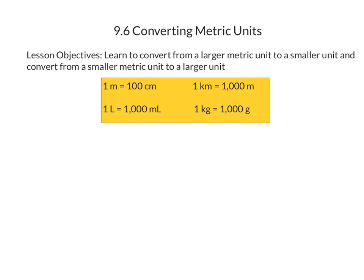To begin, we're going to take a look at some conversion factors that are going to be very helpful for us to solve our problems today. One meter is equal to 100 centimeters, one kilometer is equal to 1,000 meters, one liter is equal to 1,000 milliliters, and one kilogram is equal to 1,000 grams. We're going to use these conversion factors and make connections to what we've already learned in 9.2 and 9.4 with multiplying and dividing decimals by tens, hundreds, and thousands. Once you understand the pattern involved with these examples, you'll be able to apply it to more metric units.